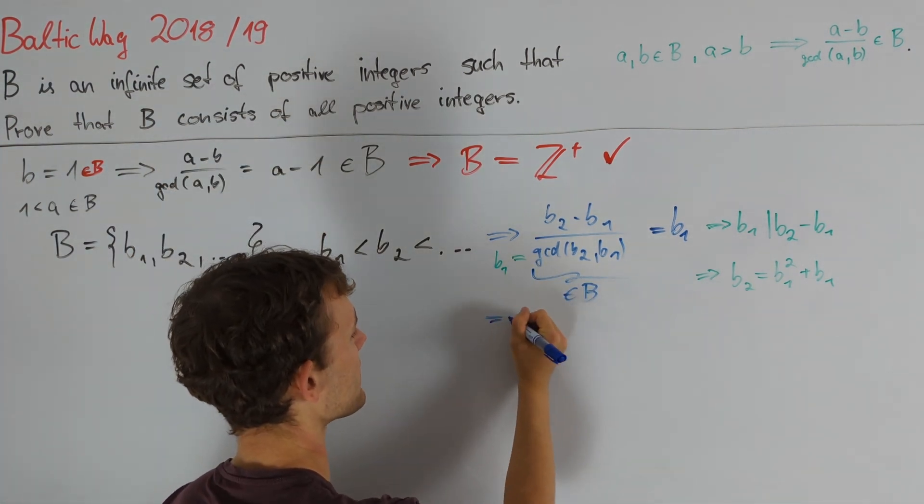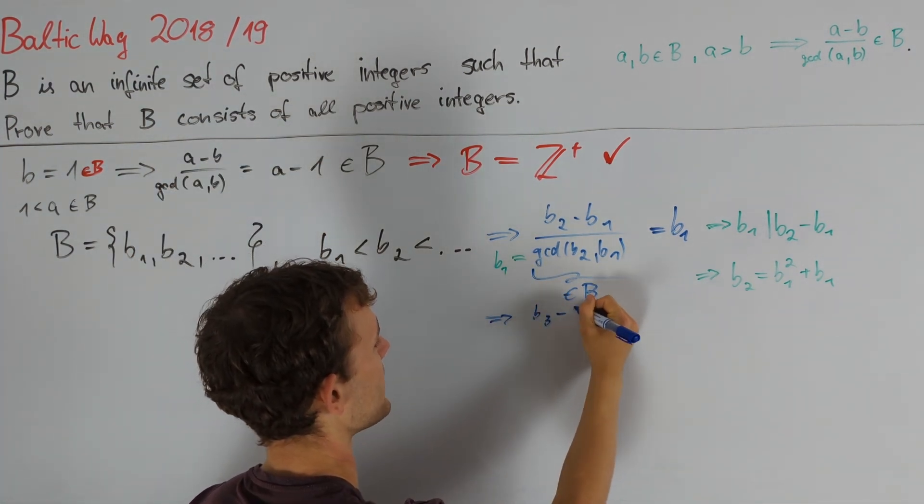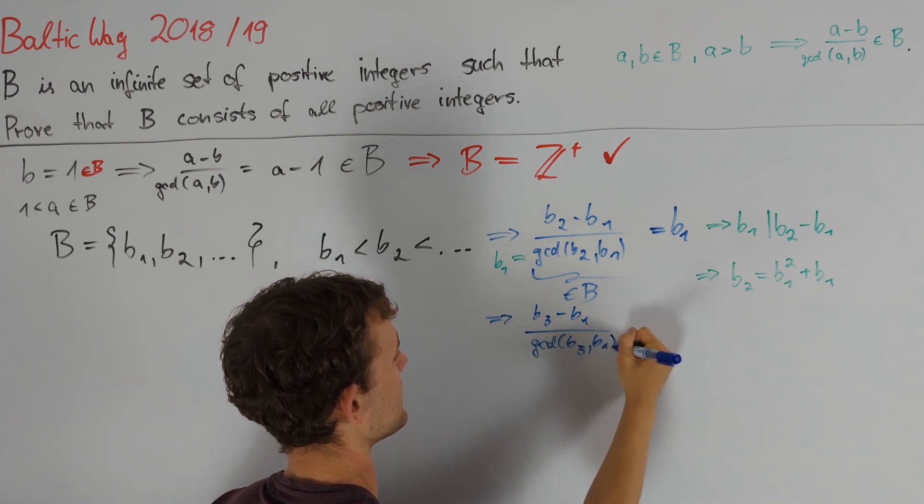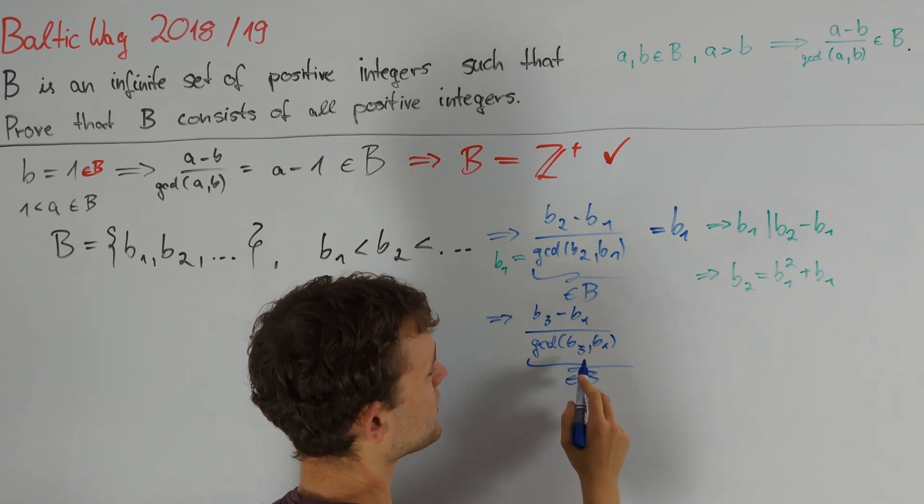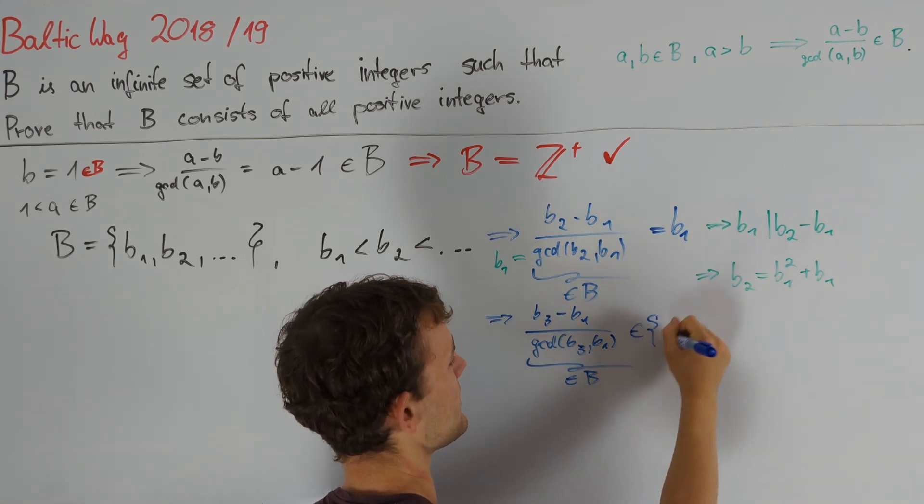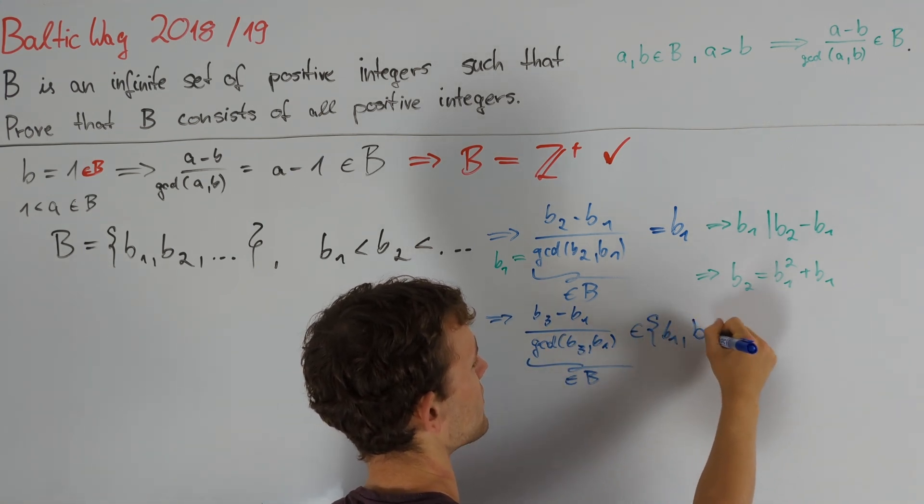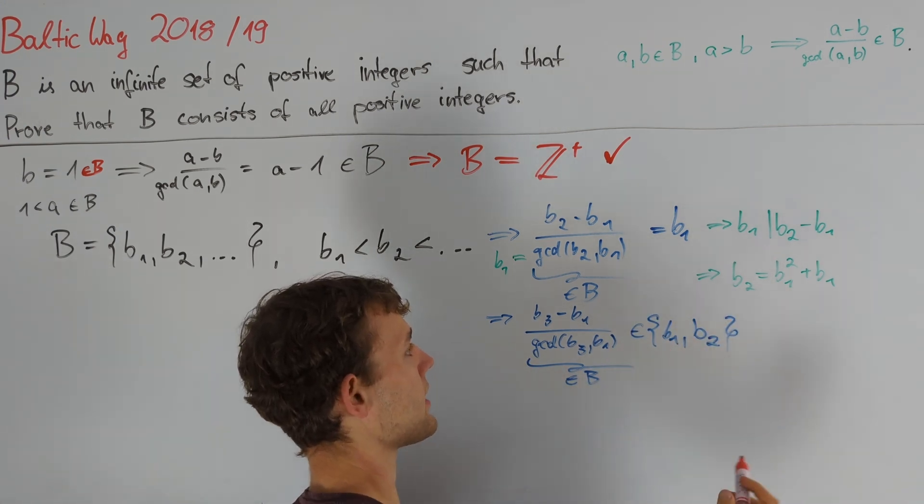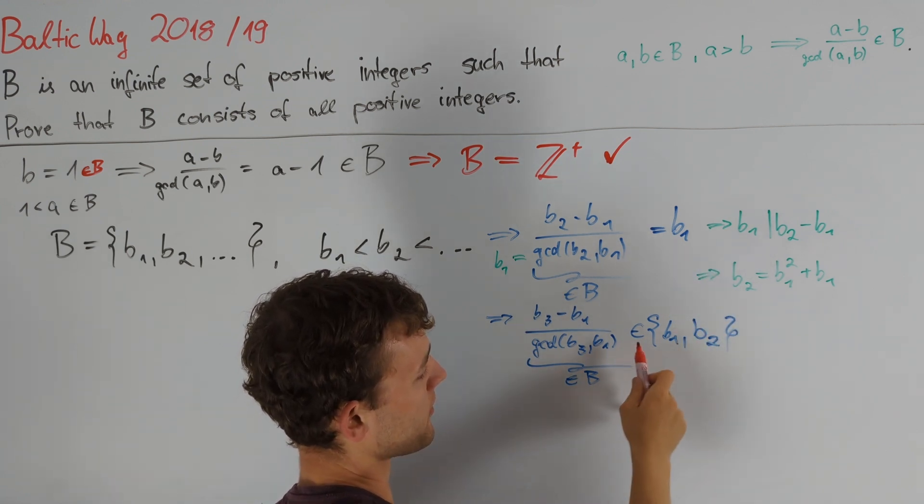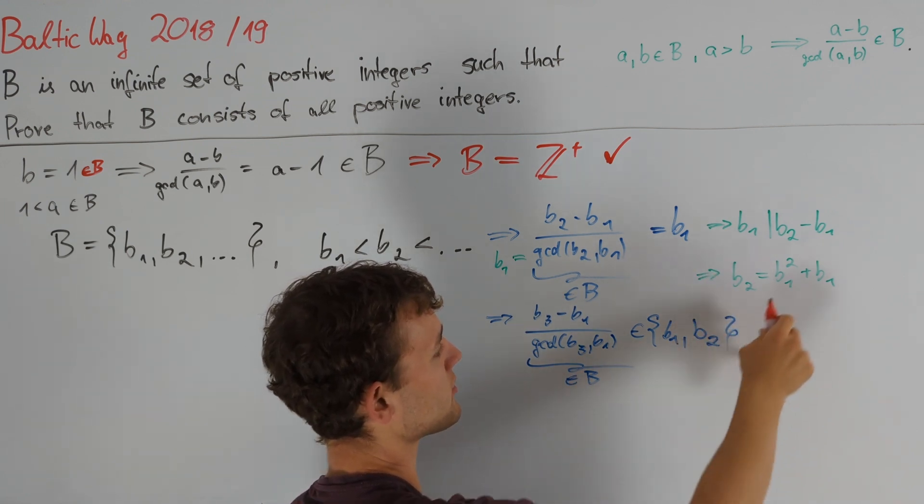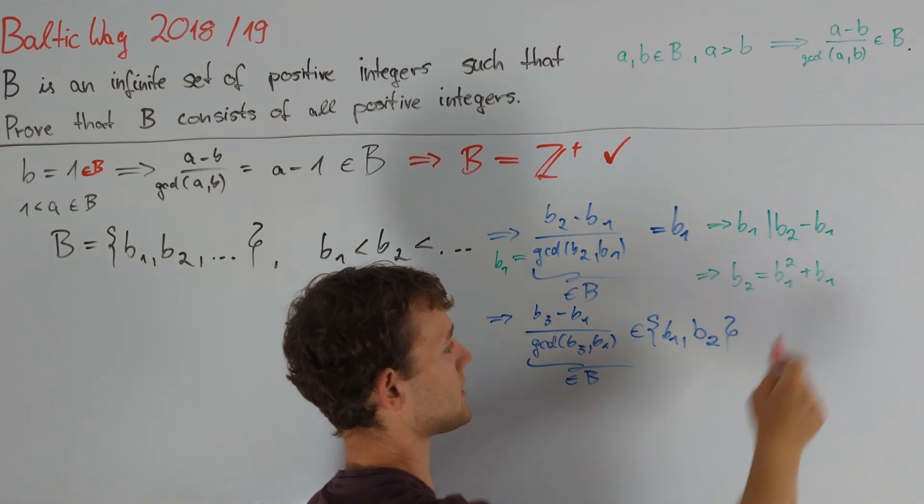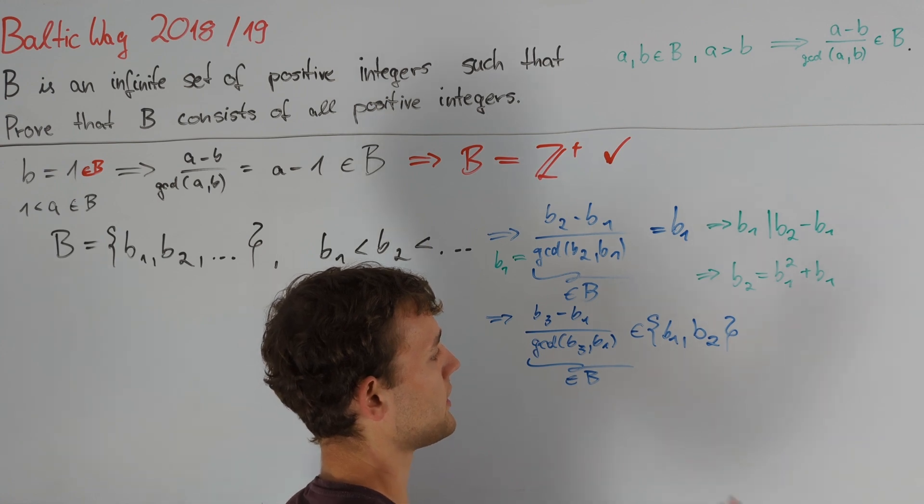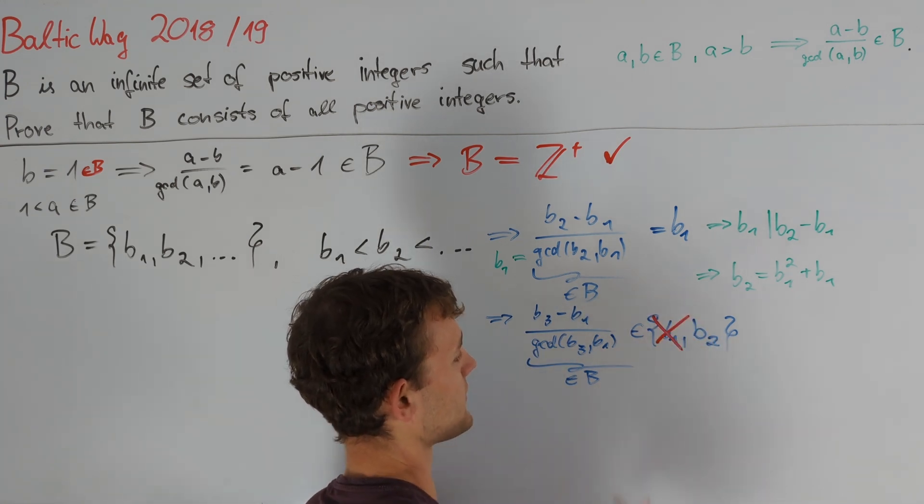And analogously, we also get that b3 minus b1 divided by the GCD of b3 and b1 is contained in B. Now, since this is a positive integer less than b3, we conclude that this is either equal to b1 or b2. Let's consider the first case that this quantity equals b1. We can replicate these steps exactly to conclude from this equality that b3 must also be equal to b1 squared plus b1. But since b2 is less than b3, these two values should be distinct, and so we can cross out this first case.